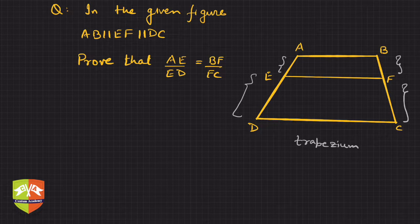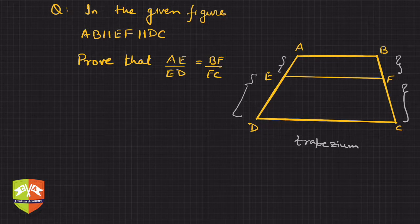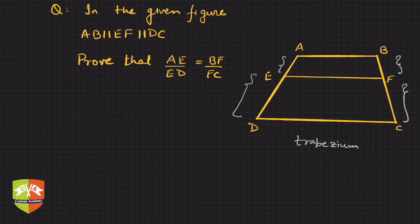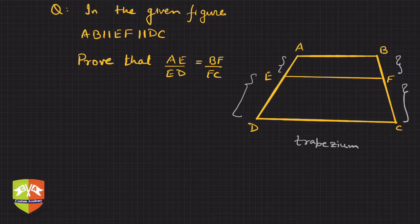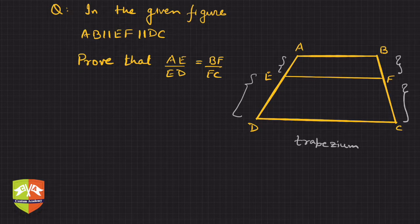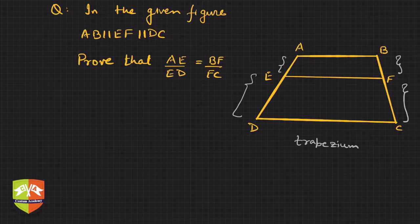The moment we see such a question with this diagram, if you see there are parallel lines and you are asked to prove two ratios to be equal, if you notice this is basically ratios and parallel lines.